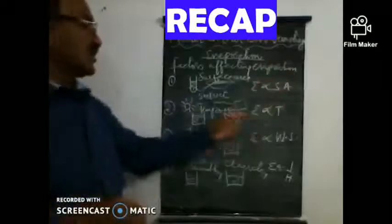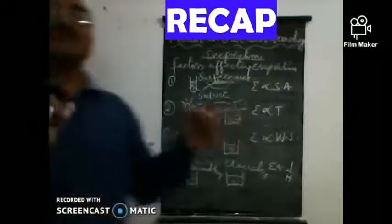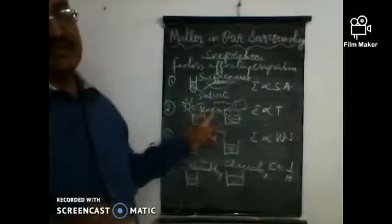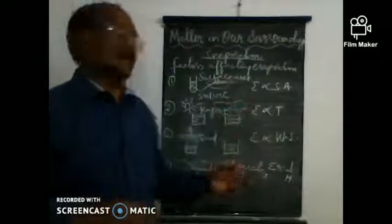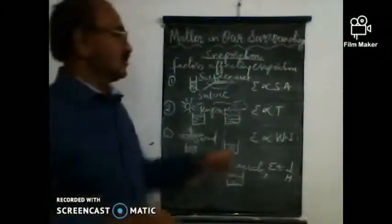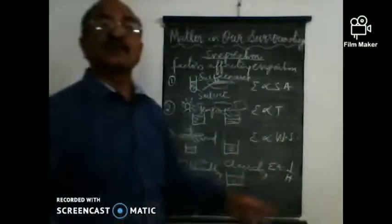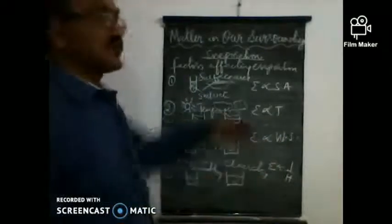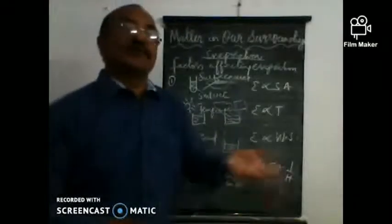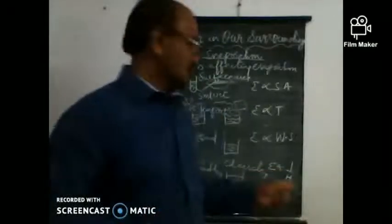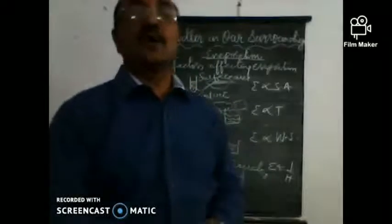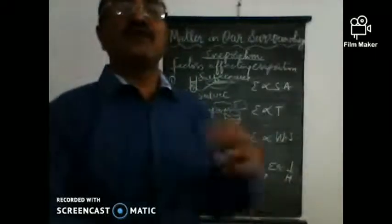To summarize: evaporation increases as surface area increases. Evaporation is quicker in sunlight because temperature rises. As wind speed increases, evaporation also increases. As humidity increases, water vapor in the atmosphere suppresses evaporating particles, so evaporation decreases — it is inversely related to humidity. We will now learn more about common phenomena where evaporation is useful.